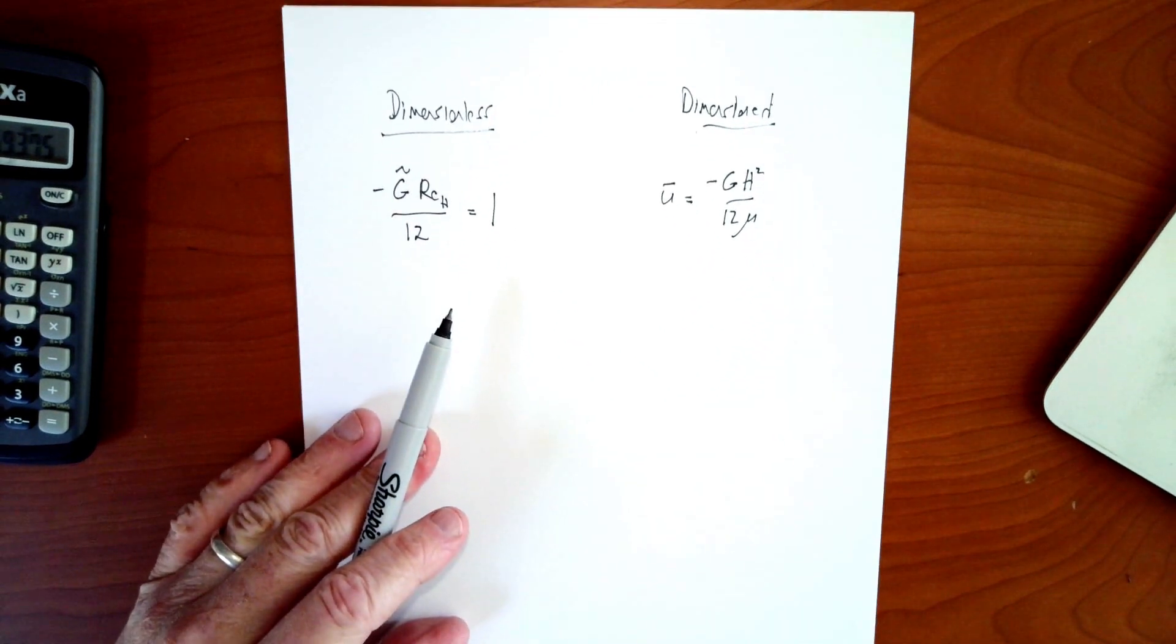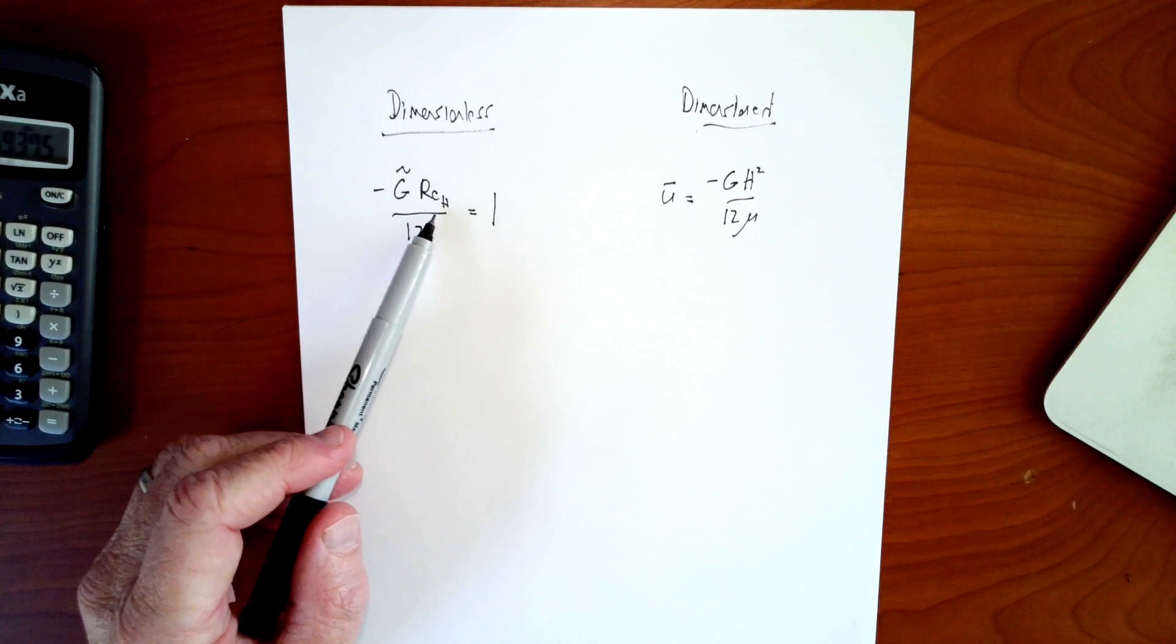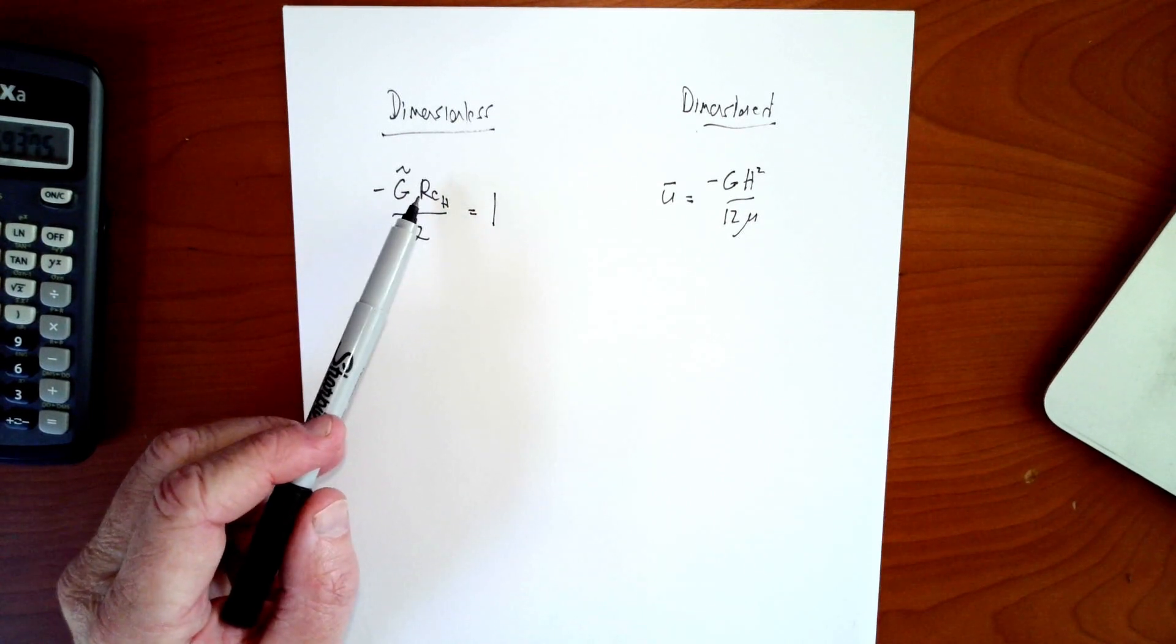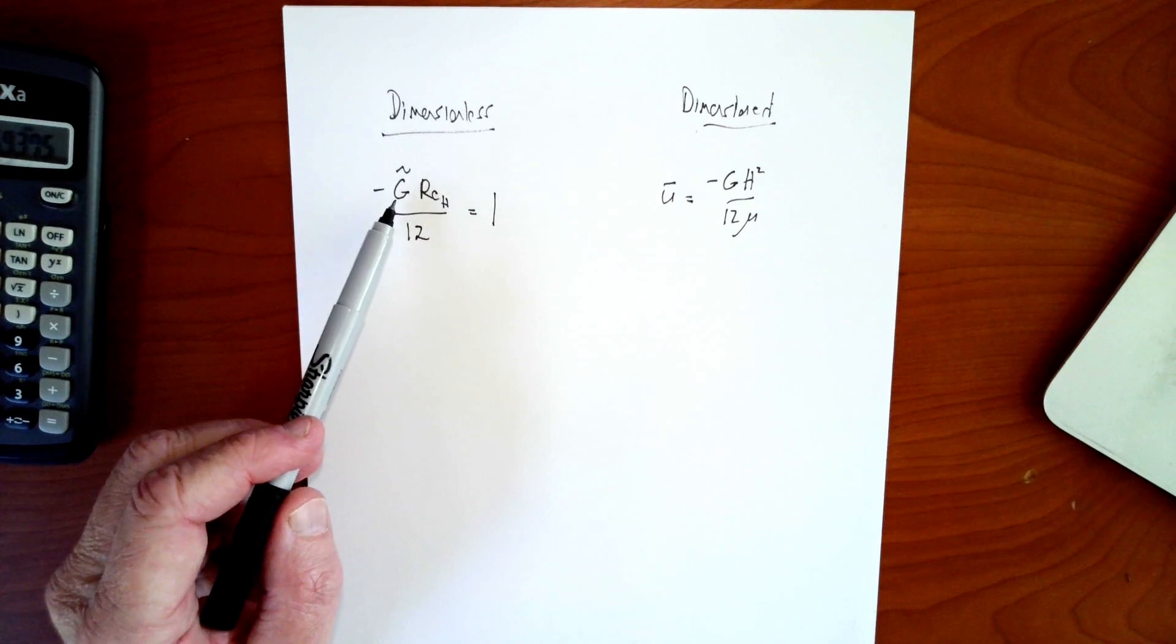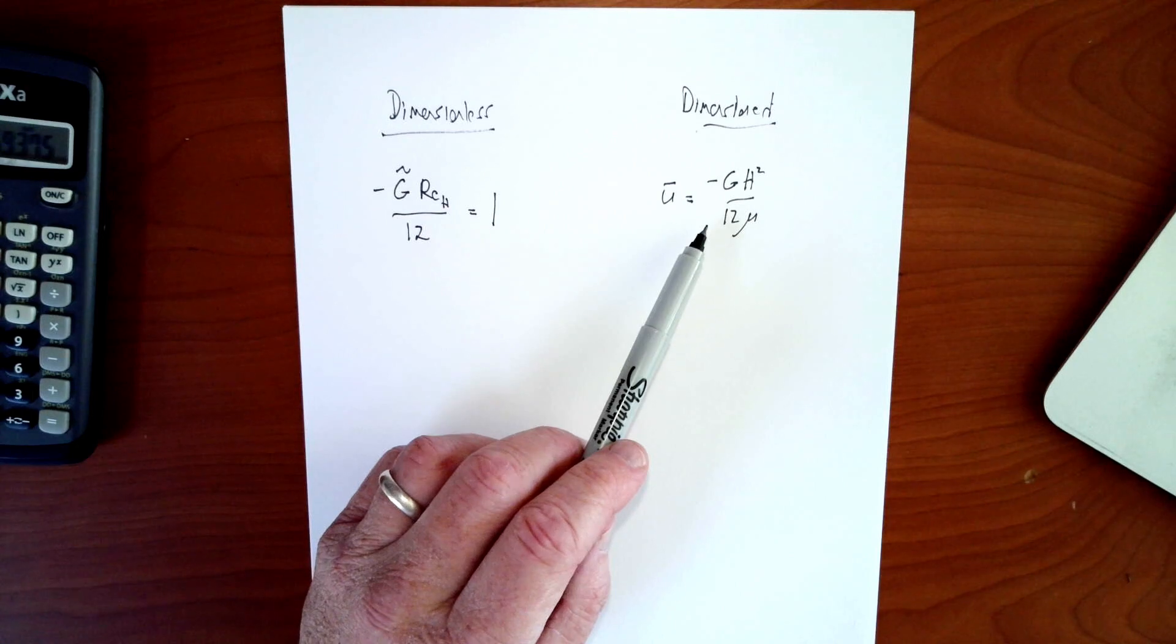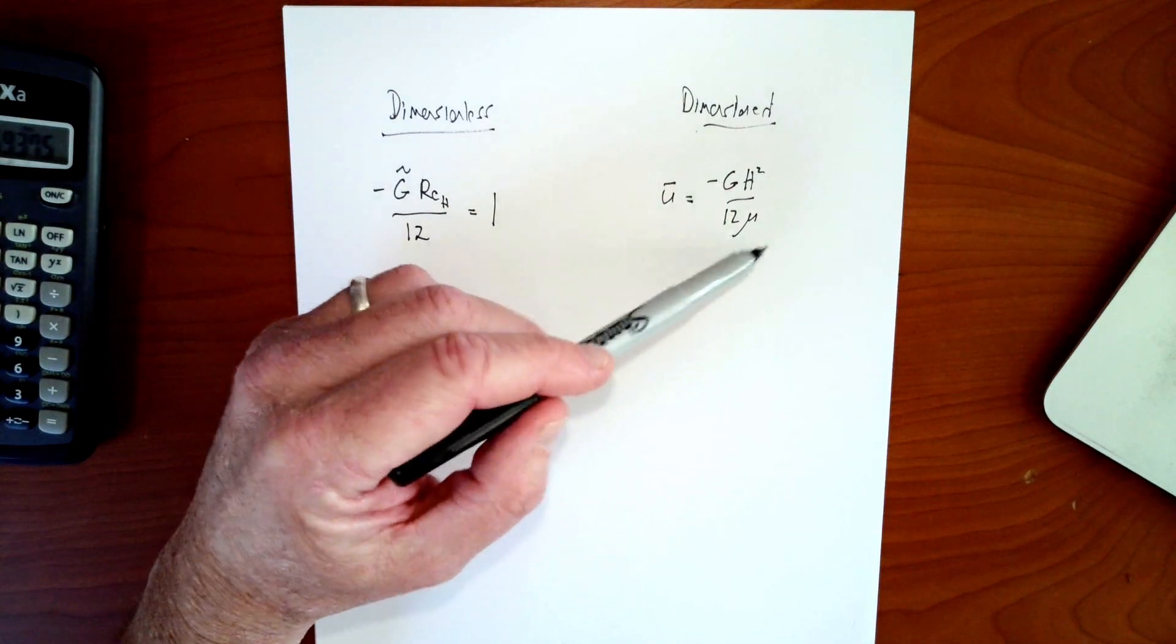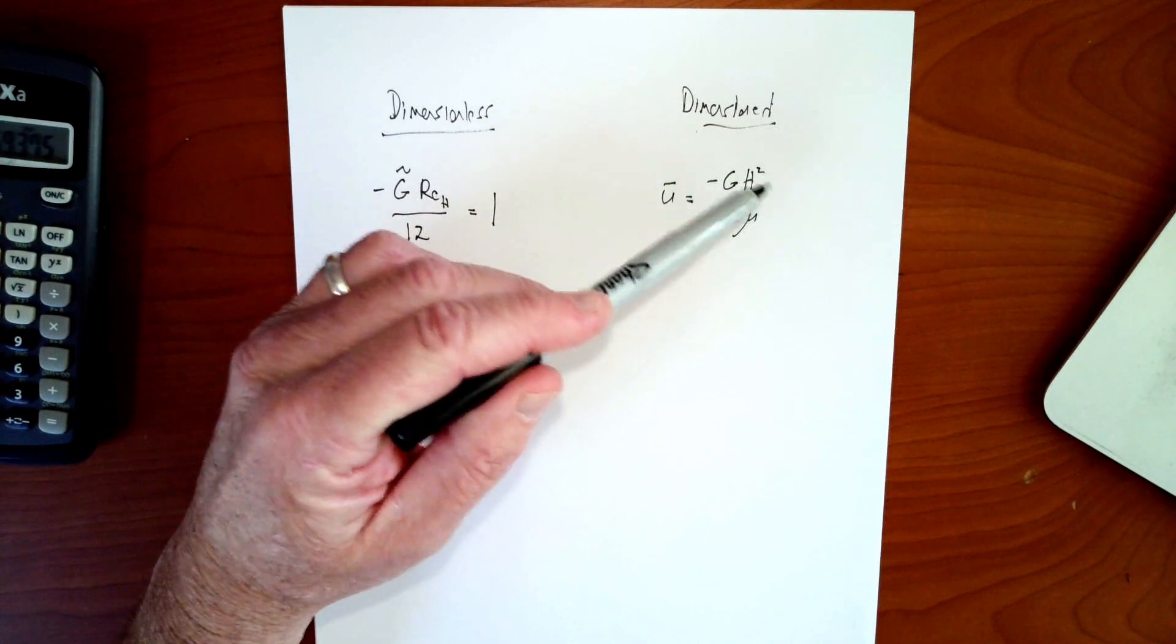The argument, I would argue for dimensionless analysis is this really shows you an underlying physical phenomenon that the pressure gradient, dimensionless pressure gradient depends only on the Reynolds number or conversely, the Reynolds number depends only on the dimensionless pressure gradient. That's very clear from this relationship. It's nothing like as clear in this relationship. This relationship says that the average velocity depends on the height of the gap, the pressure gradient, and the viscosity. Those are all true things and important things.